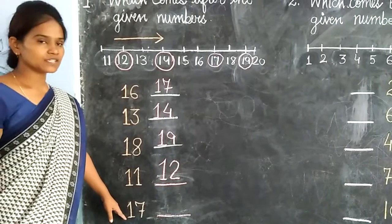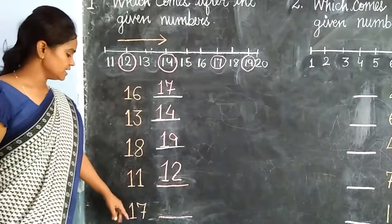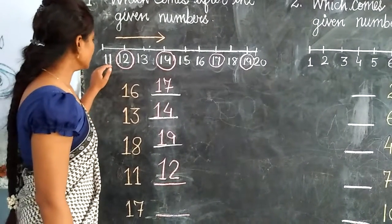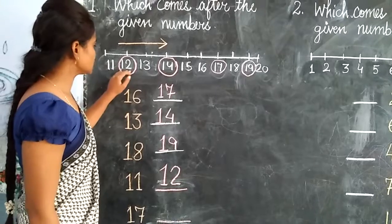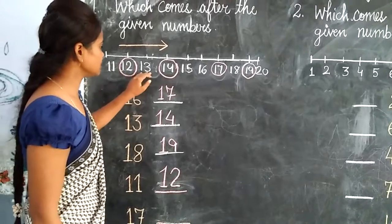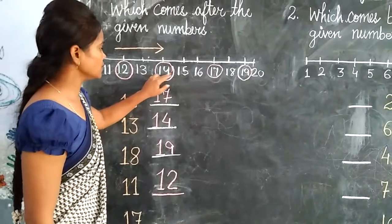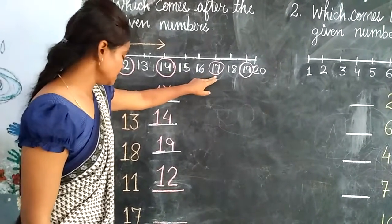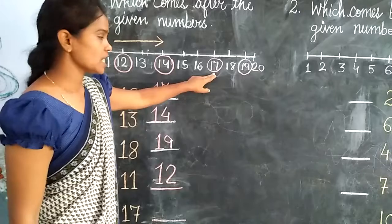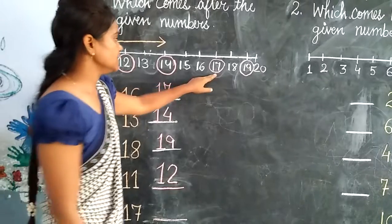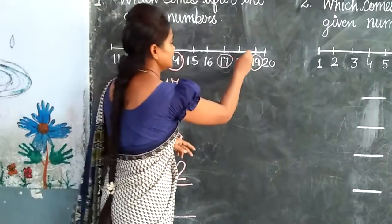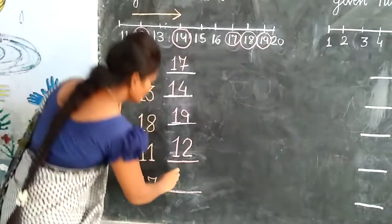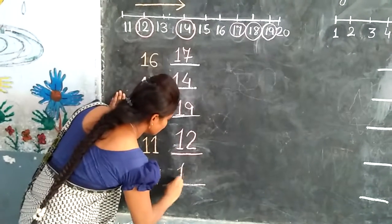Next number is 17. What comes after 17? Yes — 18. We will write here: 18.